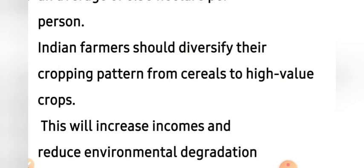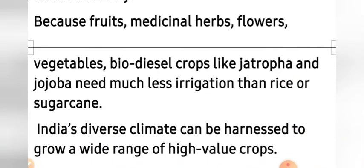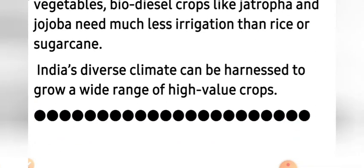So what should Indian farmers do? They should diversify and change their cropping pattern from cereals like wheat and rice to high-value crops like rubber and tea. This will increase incomes and reduce environmental degradation simultaneously, because fruits, medicinal herbs, flowers, vegetables, and biodiesel crops like Jatropha and Jojoba need much less irrigation than rice or sugarcane. India's diverse climate can be harnessed to grow a wide range of high-value crops and improve the condition of the Indian farmer.